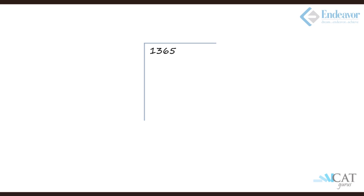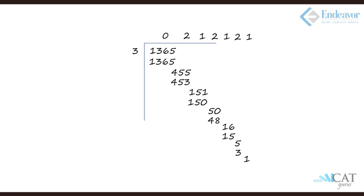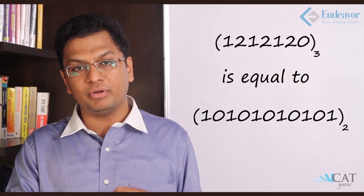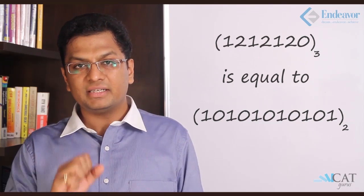Now we convert 1365 from decimal to base 3 using the division method. 1365 is divisible by 3 giving quotient 455 with remainder 0. Then 453 divides giving quotient 151 and remainder 2. Continuing the process, the remainders collected are 0, 2, 1, 2, 1, 2, 1. Reversed, this gives 1212120 in base 3.